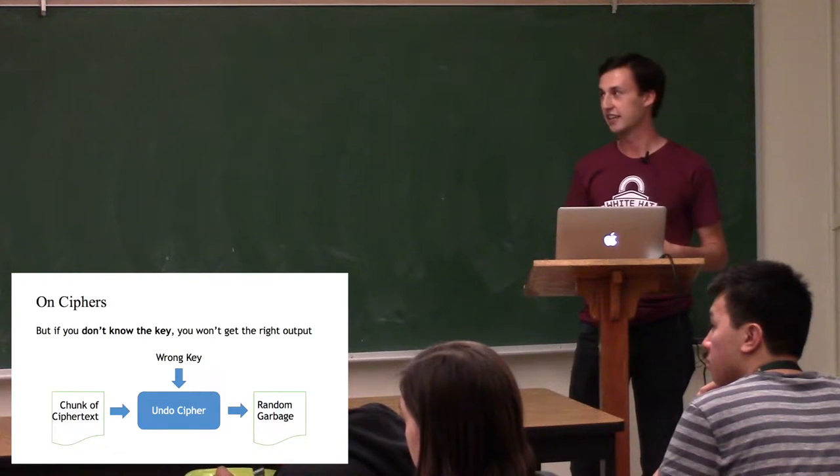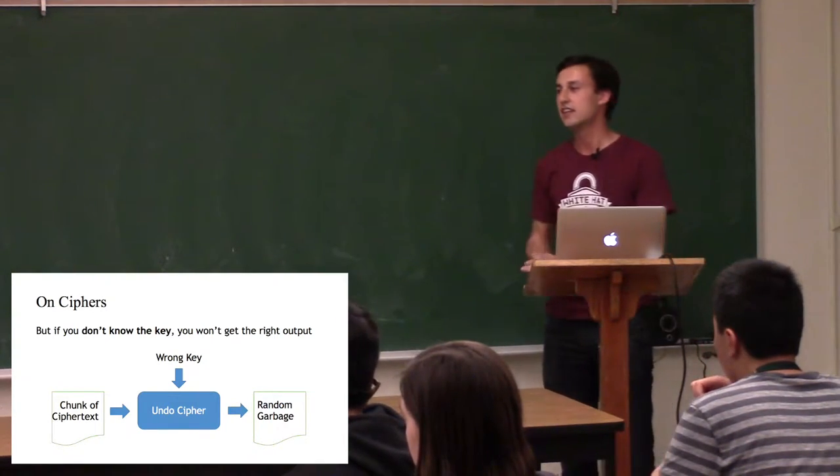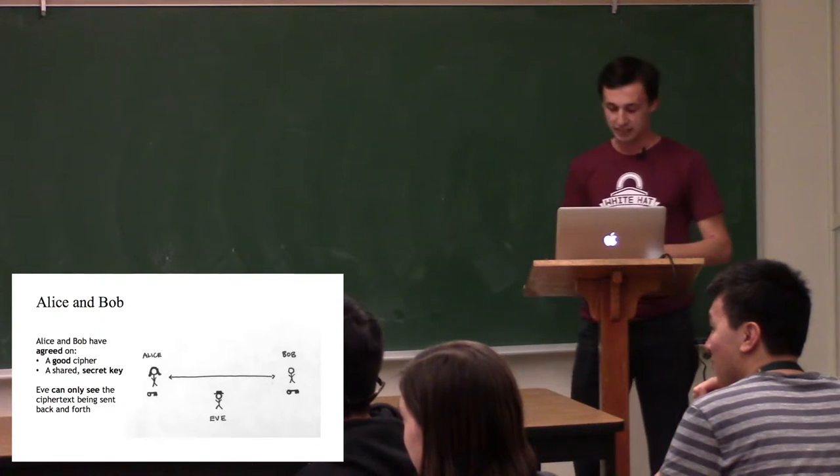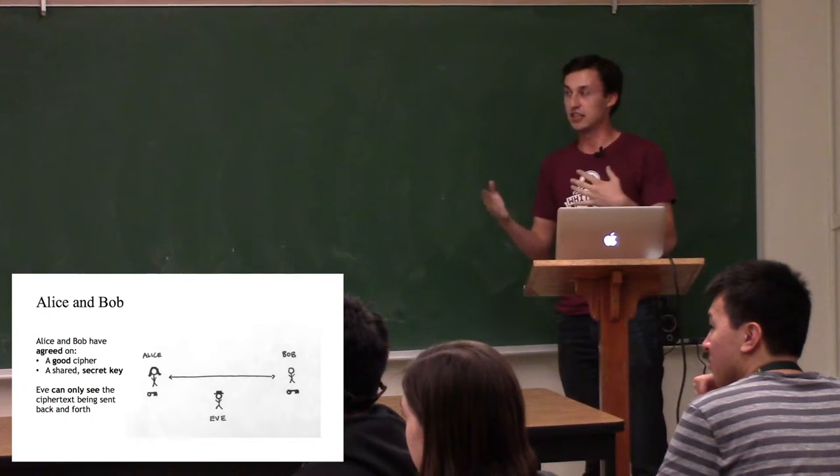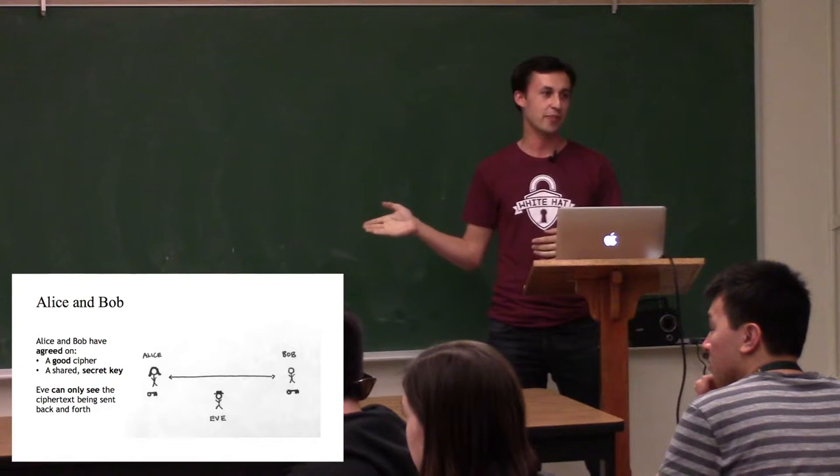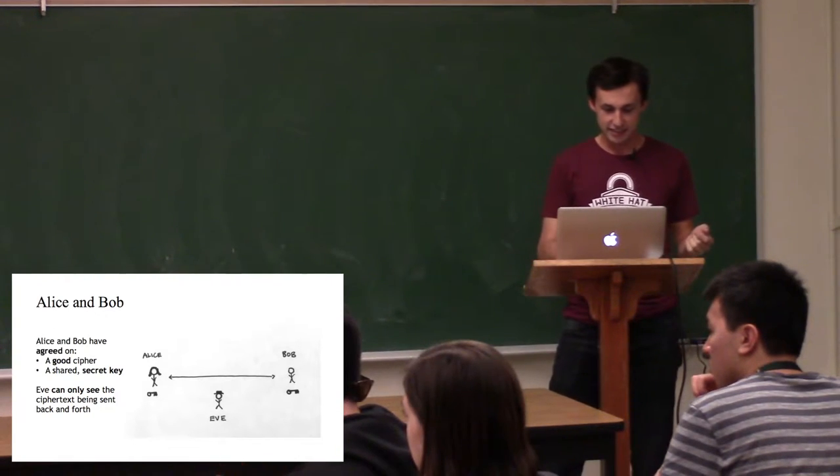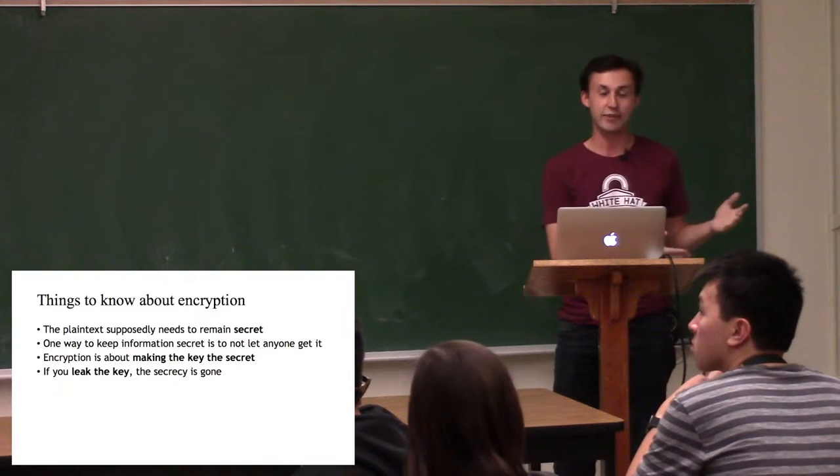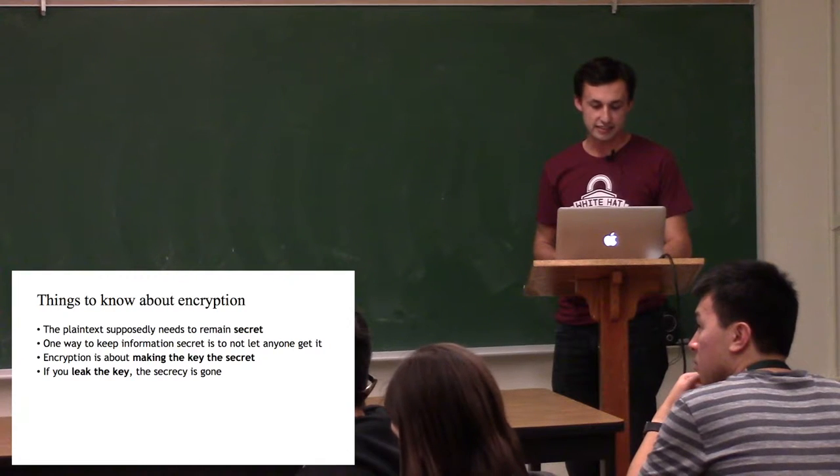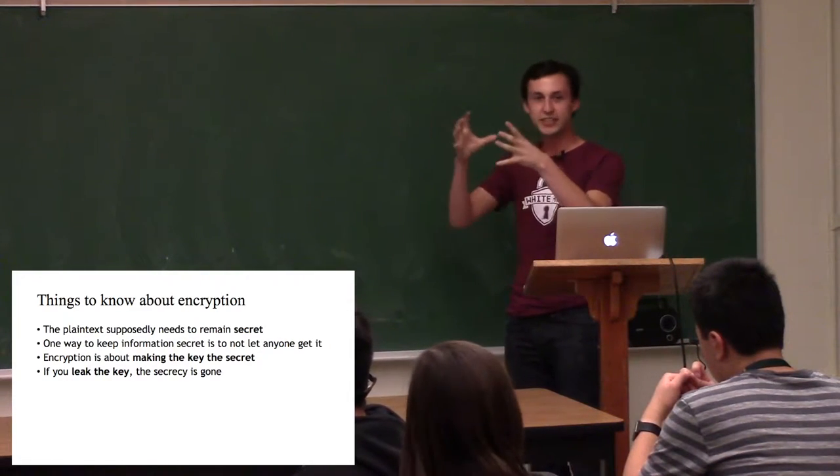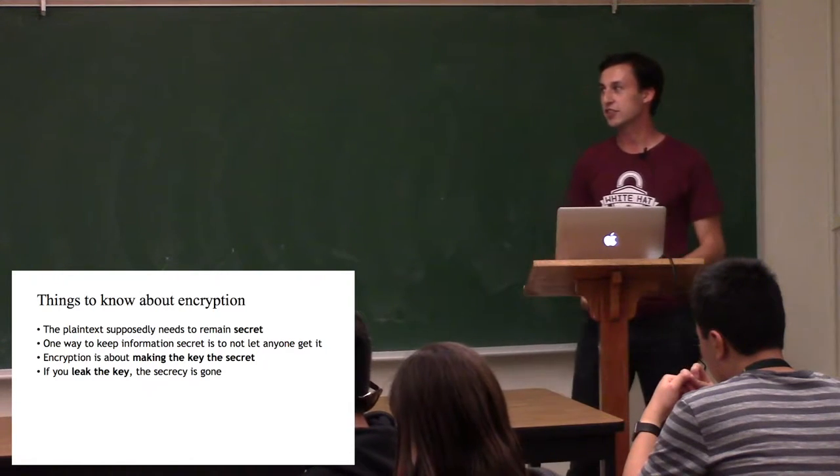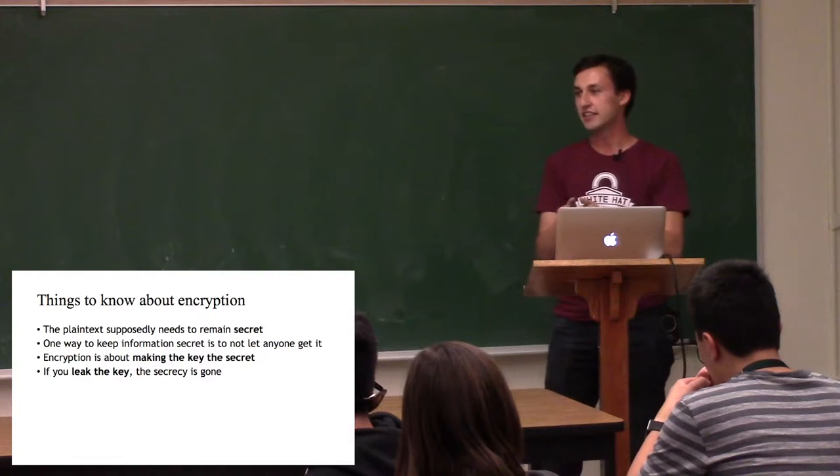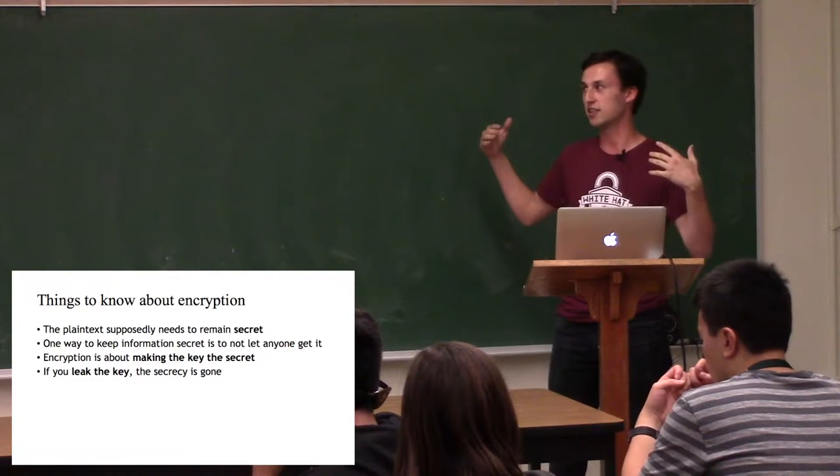But the important thing is if you don't know the key, then you get random garbage out. And so if Alice and Bob are communicating and Eve is eavesdropping on their communication, then as long as Alice and Bob have agreed on a good cipher and a shared secret key, then Eve can only see the ciphertext being sent back and forth. And what this means is that if your goal is to keep the message secret, one way to keep it secret is not let anyone get the message to begin with. But in many cases, what we need is a way to exchange a message by moving the secrecy to another bit of data.